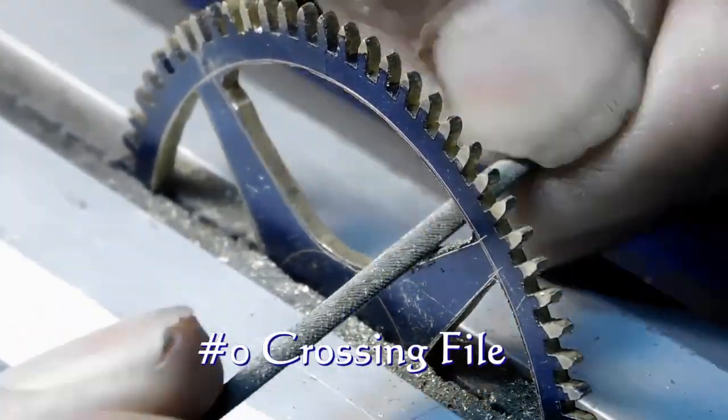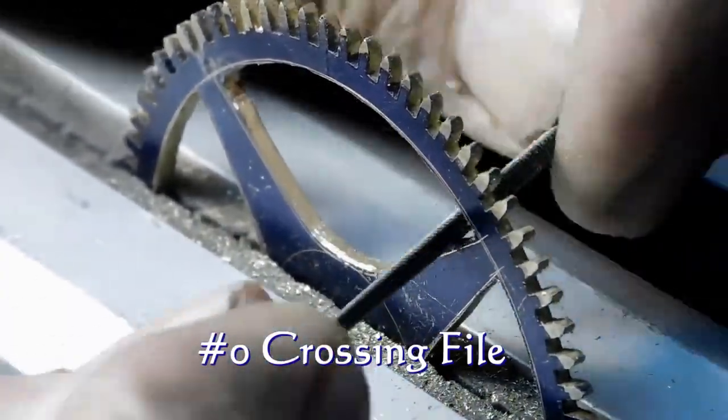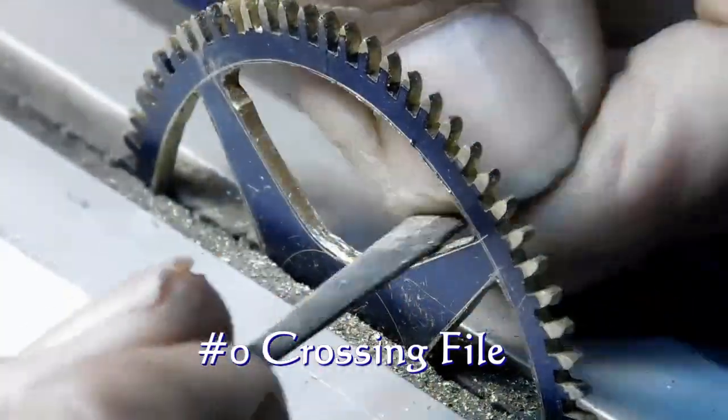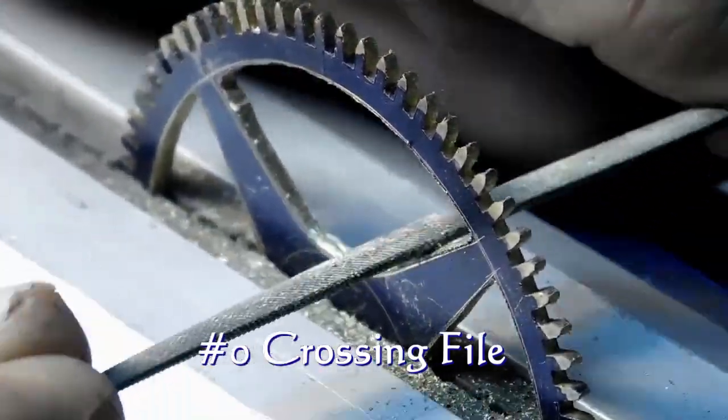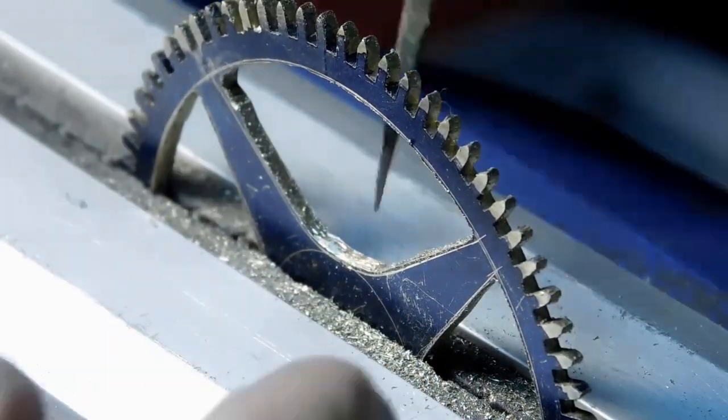We're starting out with a number zero crossing file to get - that's the coarsest file that I use - just trying to get down closer to the line, just get rid of all the saw marks, things like that.